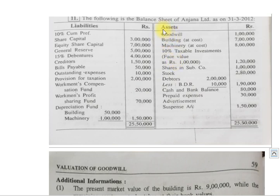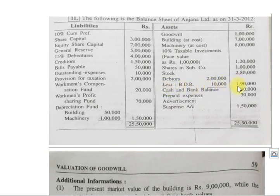On the asset side: goodwill ₹1 lakh, building (at cost) ₹7 lakhs, machinery (at cost) ₹8 lakhs, 10% taxable investment (face value ₹1 lakh, market value ₹1 lakh 20,000), shares in subsidiary companies ₹1 lakh, stock ₹2 lakhs 80,000, debtors ₹2 lakhs less bad debts reserve ₹10,000 = ₹1 lakh 90,000, cash and bank balance ₹80,000, prepaid expenses ₹30,000, advertisement suspense account ₹1 lakh 50,000. Both sides total ₹25 lakhs 50,000.